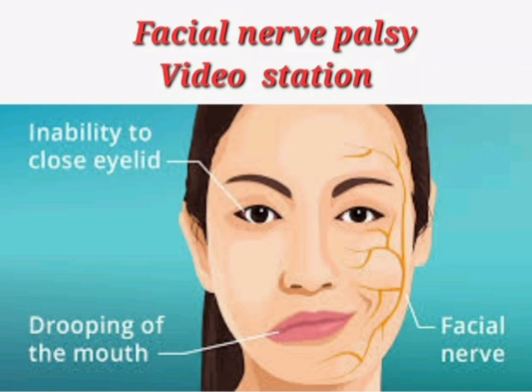In this video I am discussing facial nerve palsy. There is drooping of the mouth and inability to close the eye. This is a lower motor neuron lesion because it affects the upper part of the face. Remember: upper motor neuron spares the upper face. If the child is unable to close the eye, it is a lower motor neuron lesion.